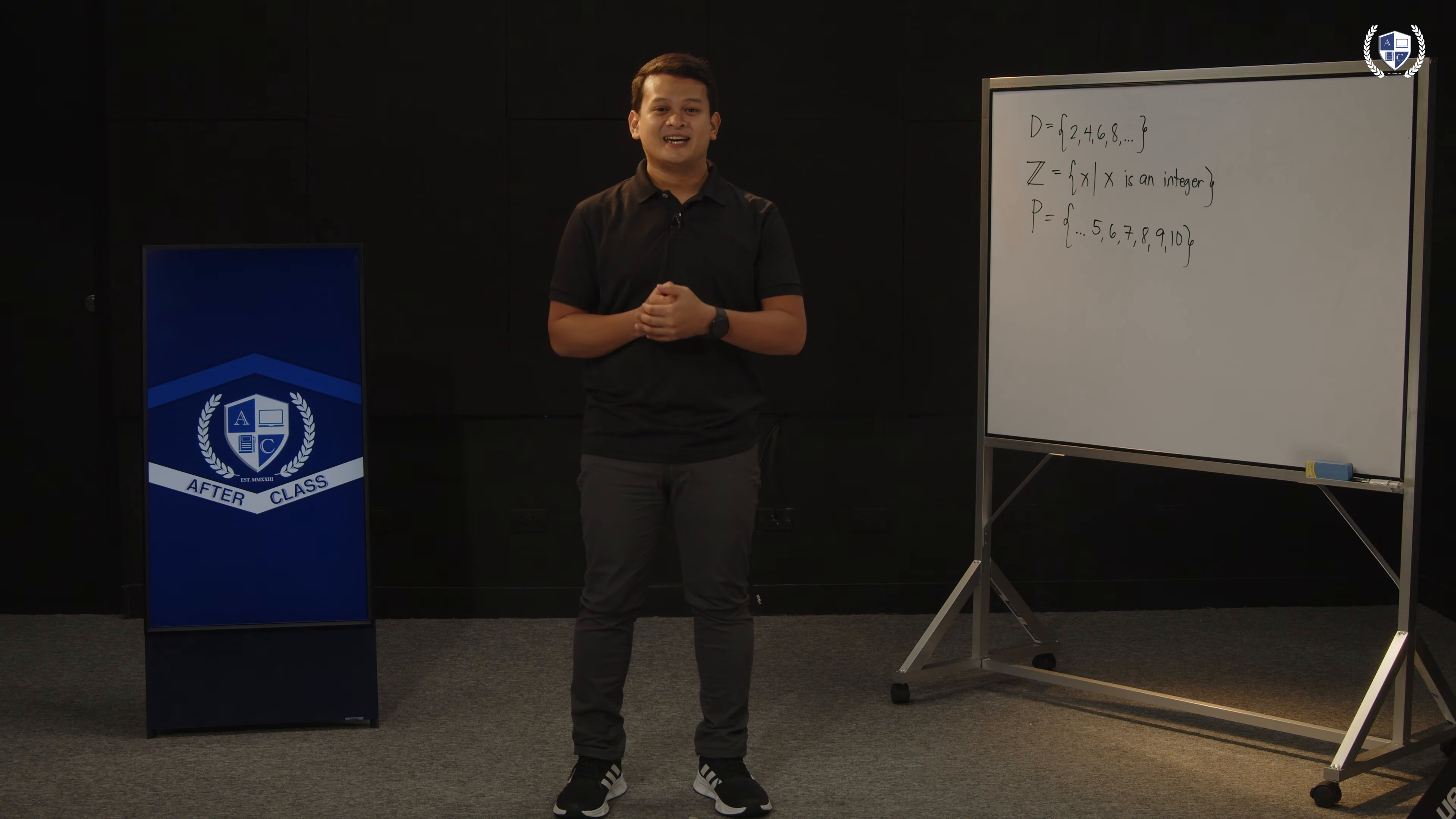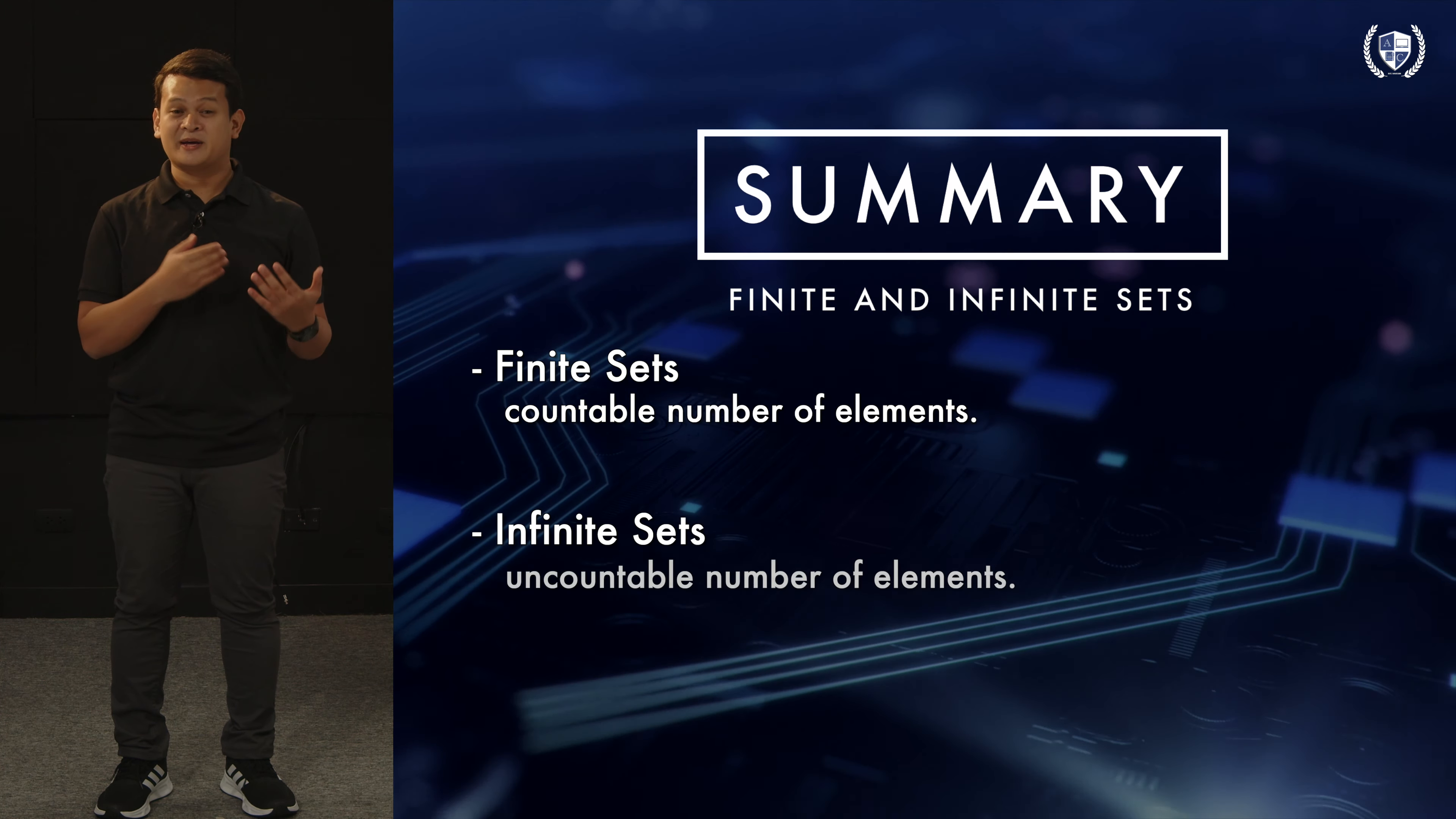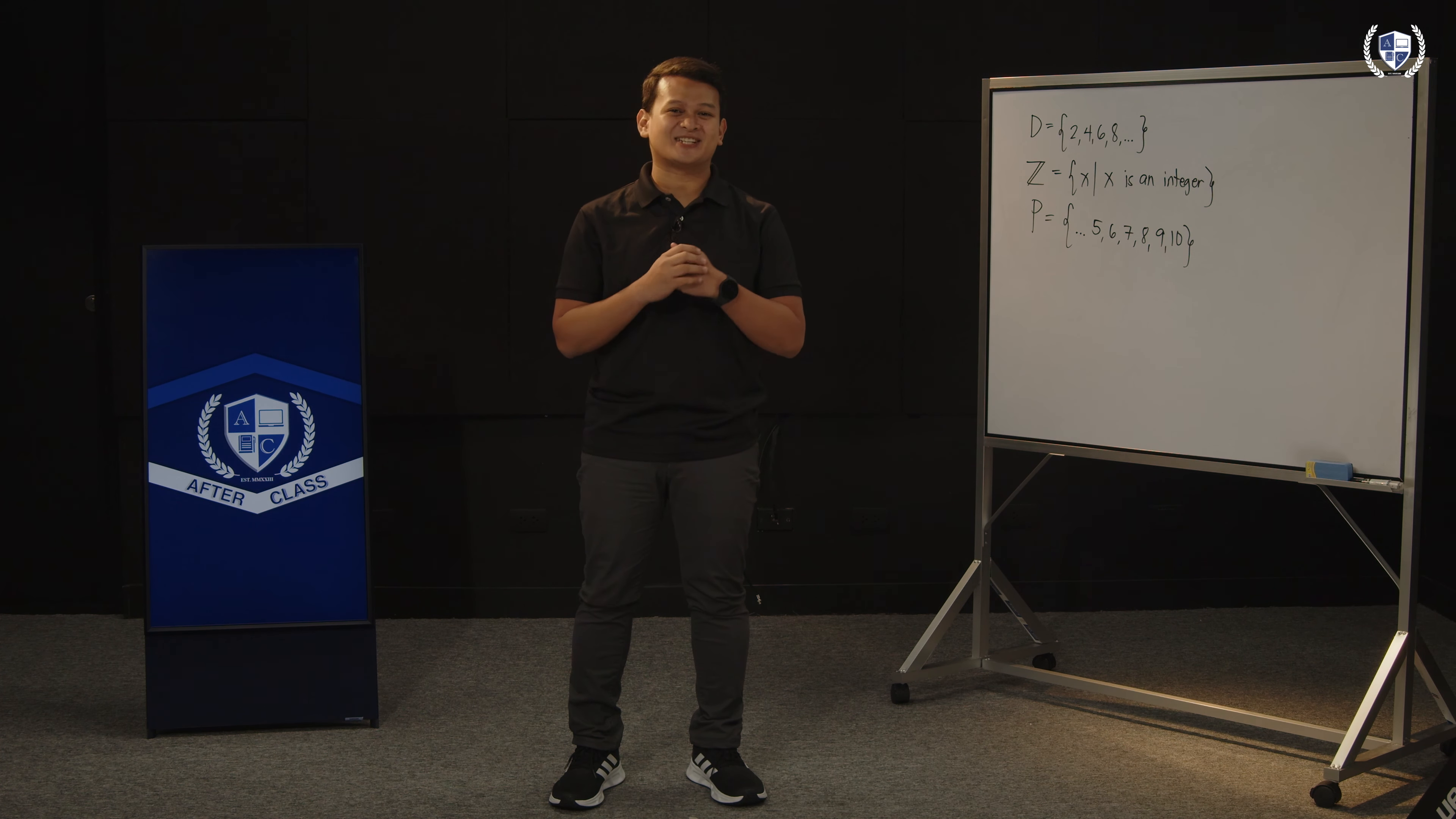For our summary, we have two types of sets. At ano yung dalawang types na yun? Finite sets and infinite sets. What are finite sets? Finite sets are sets with countable number of elements. Pwede nating bilangin yung laman ng set natin. And as for your infinite set, syempre, kabaliktaran or opposite of our finite sets, infinite sets are sets with uncountable elements. For our next discussion, ang pag-uusapan natin ay yung cardinality ng ating set. Ano yung cardinality ng set? Syempre, para may element of surprise, discuss natin sa susunod na video lesson.